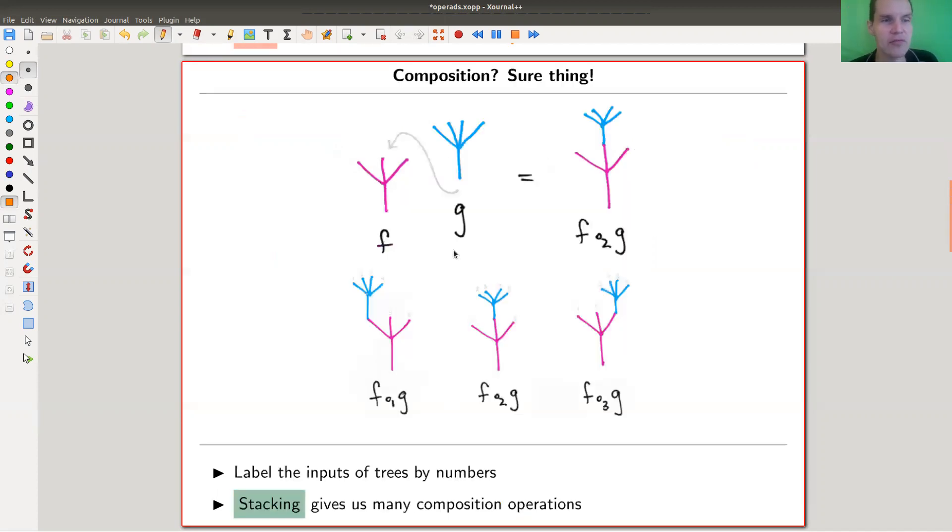So the algebra of trees, where's actually the algebra? Where's some kind of multiplication type structure on trees? Well, it's pretty nice and pretty simple and beautiful. You could just take a tree and you could stack a tree on top of a tree. So here you have my tree f with three inputs, and g is the blue one. And of course you could take the red one and stack the blue one on top right here.